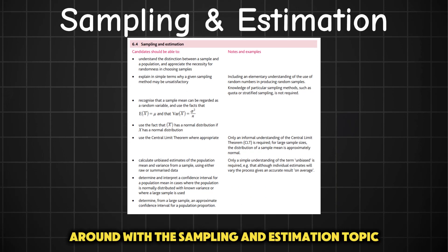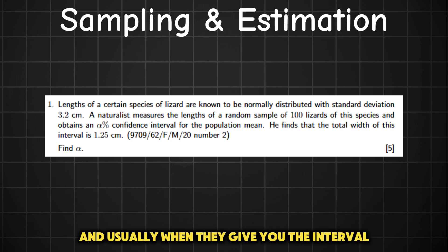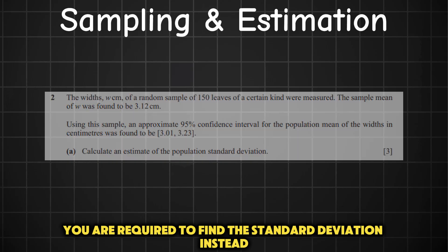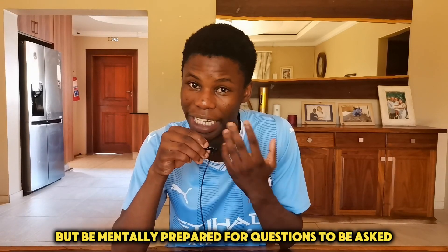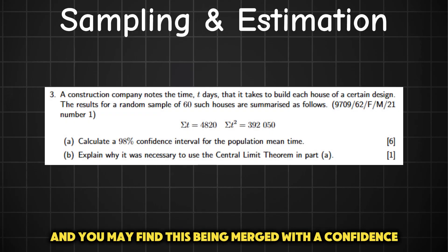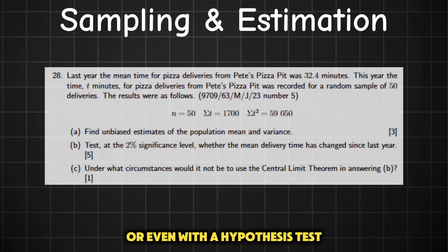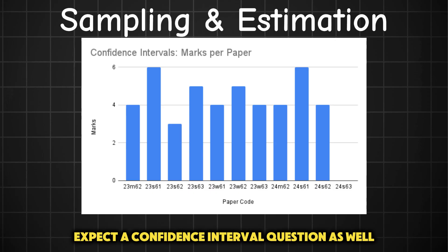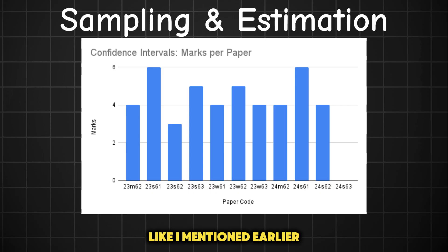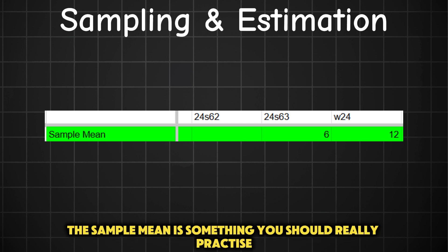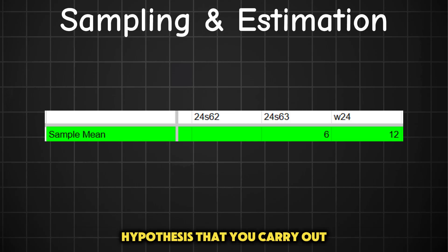They've been playing around with the sampling and estimation topic lately and we're seeing some questions asked in a slightly different manner. For example, with confidence intervals they might give you the interval and ask you to find the standard deviation instead of the confidence level alpha, as happened in June 2024. Be mentally prepared for questions in a slightly different format. Expect a 3-mark unbiased estimates question, possibly merged with a confidence interval or hypothesis test. They've also been showing some love to the sample mean question recently — practice that, as it's applied in every normal distribution hypothesis test.